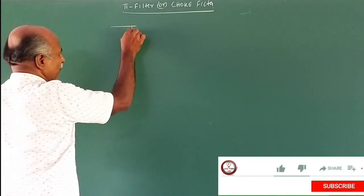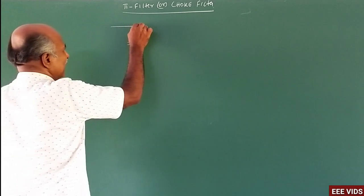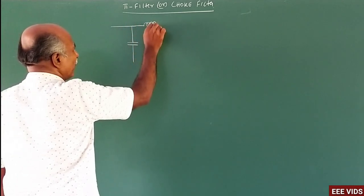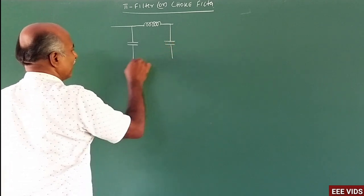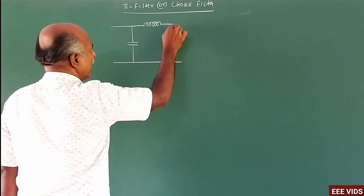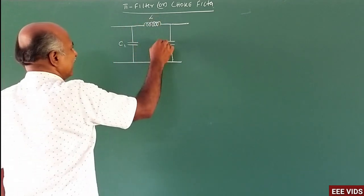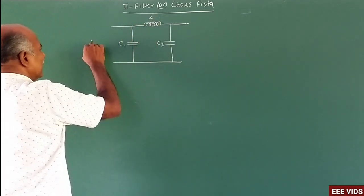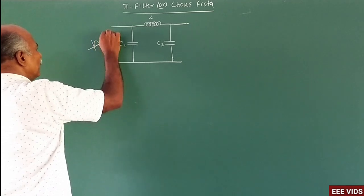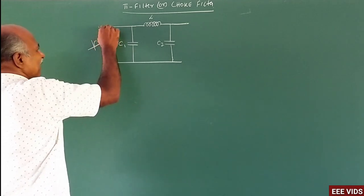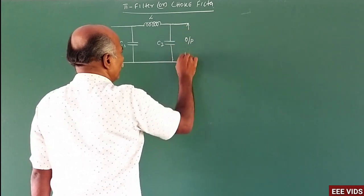In this filter, you can use 2 capacitors in a pi-shaped configuration. The pi symbol represents the shape of this filter. The components are L, C1, and C2. The input is pulsating DC and the output is pure DC.